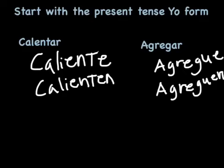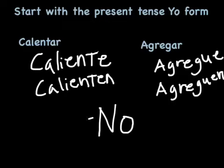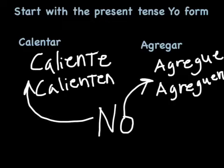If you want to make these negative commands — like 'don't add that' or 'don't heat that up' — you simply put a no in front of it. So no caliente or no calienten, and no agregue.